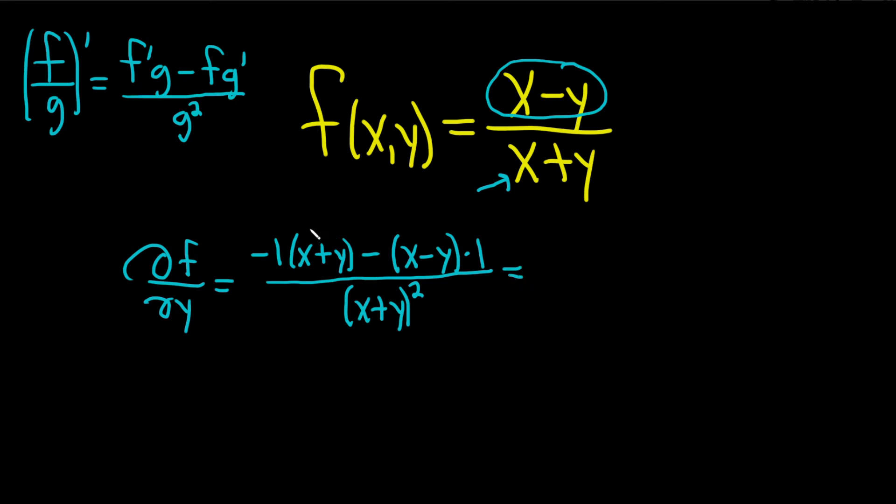This is equal to negative x and the negative x, which gives us negative 2x. And then negative y and positive y will simply cancel.